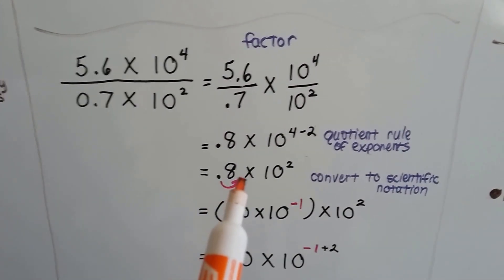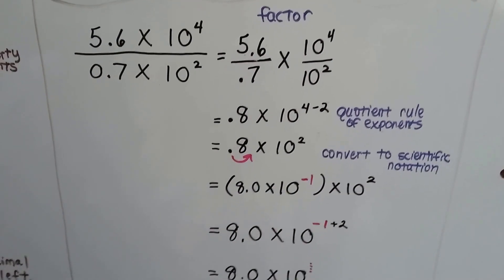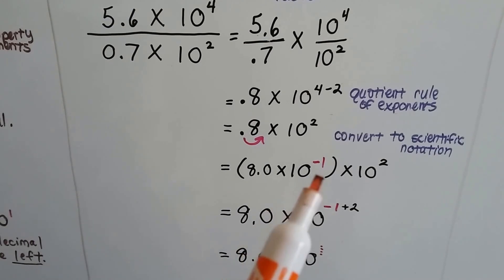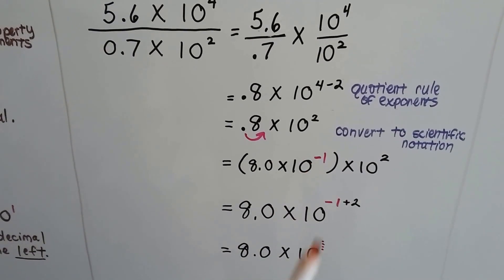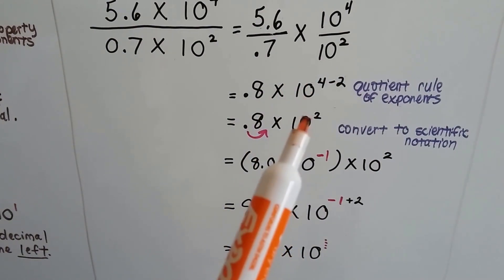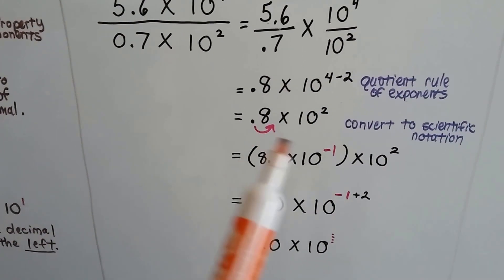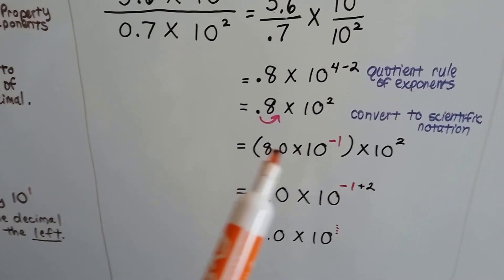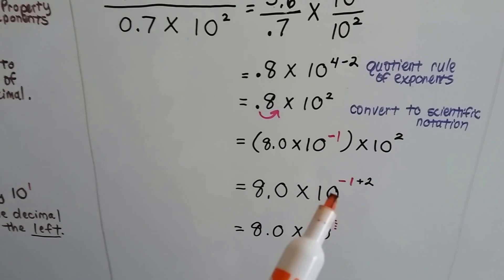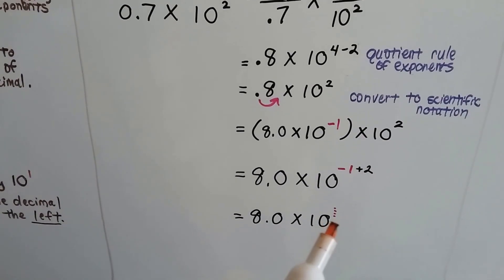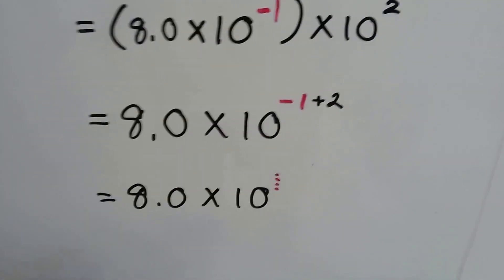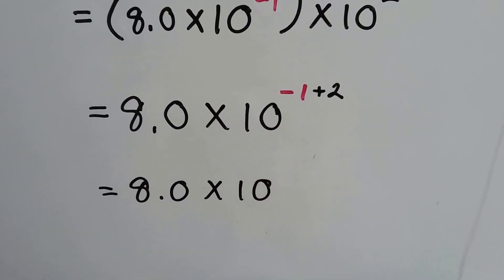We need to move the decimal place to get 8 into scientific notation. Because we're moving it to the right, we're going to multiply by 10 to the negative 1. We add the negative 1 and the 2 that it originally had from 10 to the 2nd power before we moved it. Adding the exponents, we have negative 1 plus 2, which gives us 1 — and we don't have to write the 1.